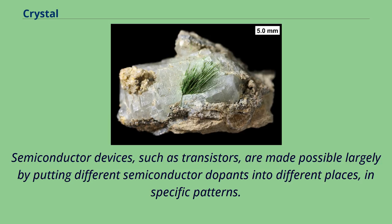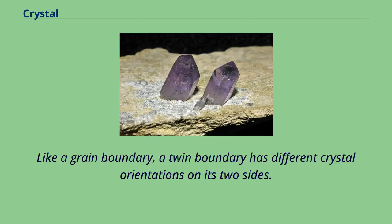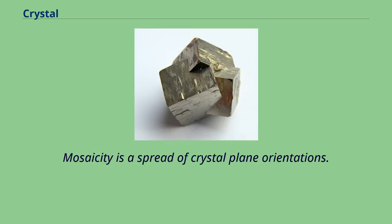Twinning is a phenomenon somewhere between a crystallographic defect and a grain boundary. Like a grain boundary, a twin boundary has different crystal orientations on its two sides. But unlike a grain boundary, the orientations are not random, but related in a specific, mirror-image way. Mosaicity is a spread of crystal plane orientations — a mosaic crystal consists of smaller crystalline units that are somewhat misaligned with respect to each other.